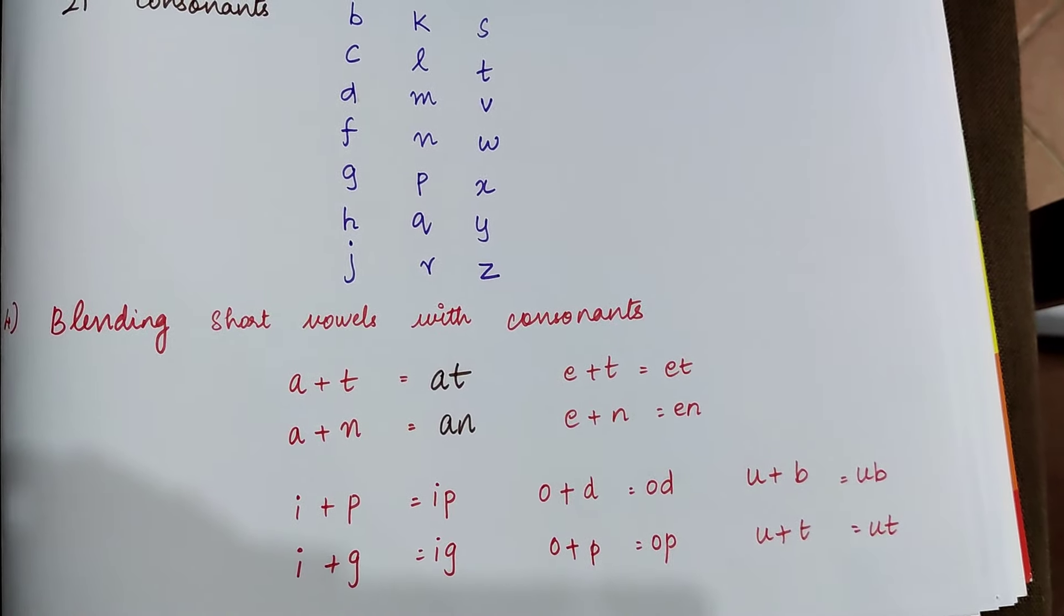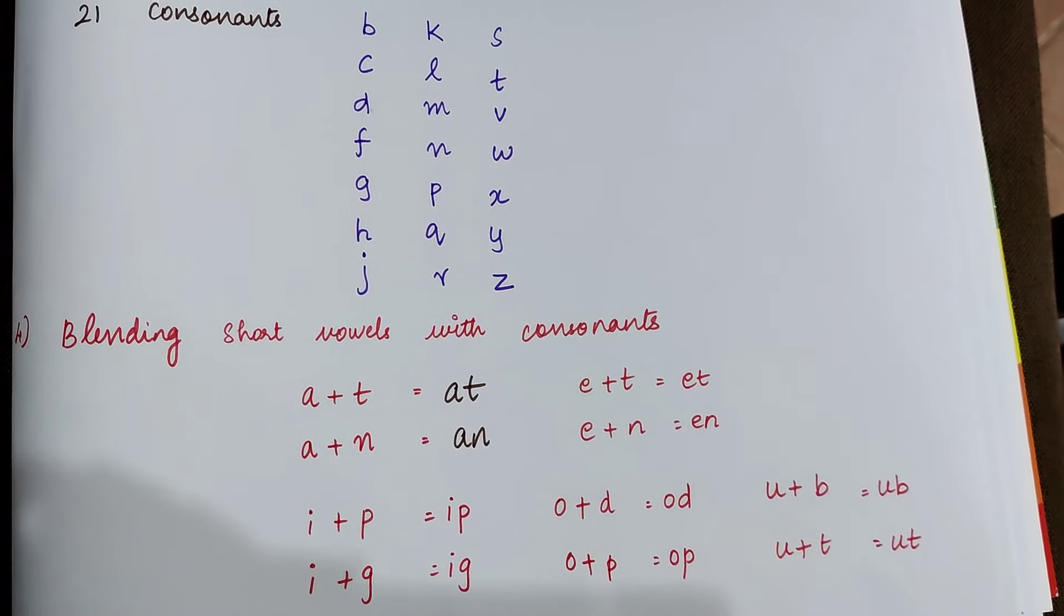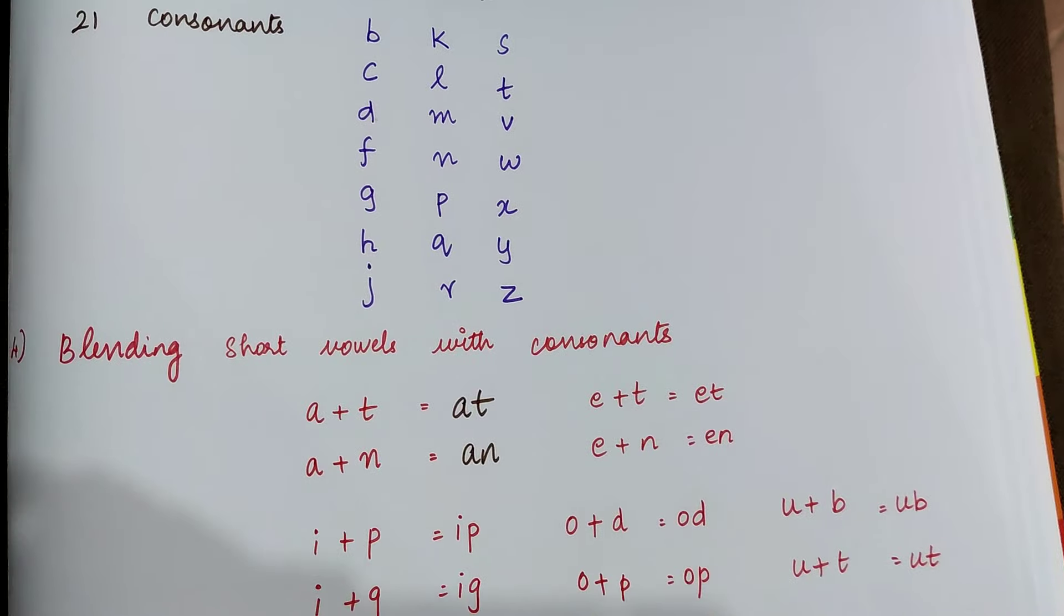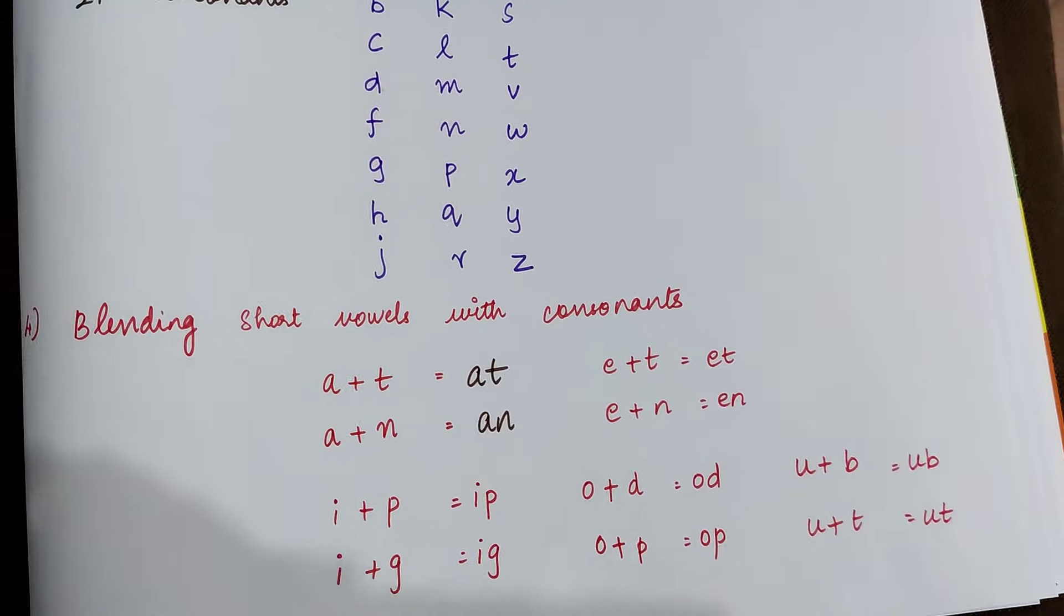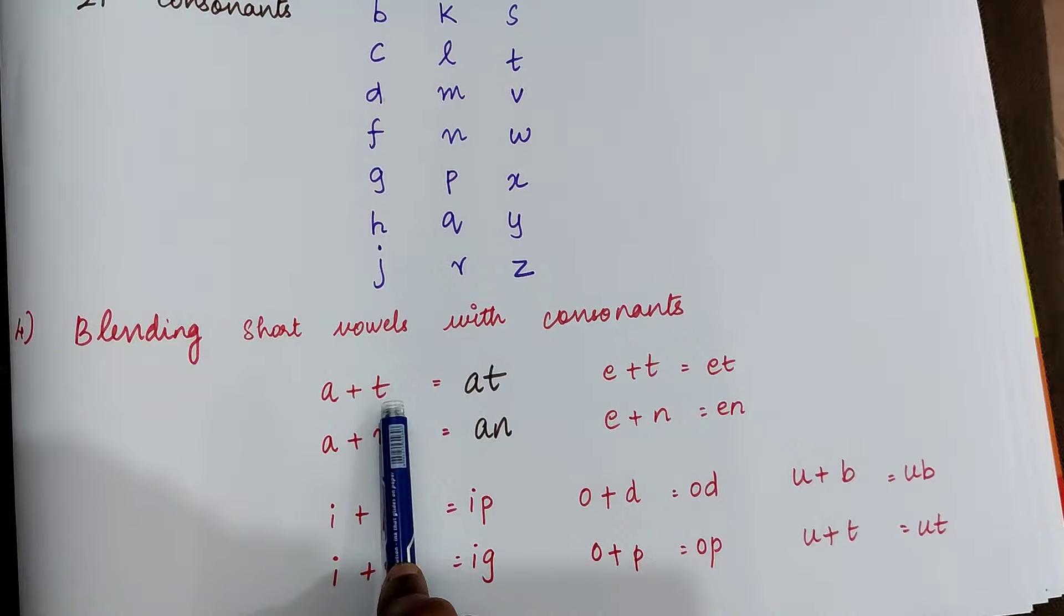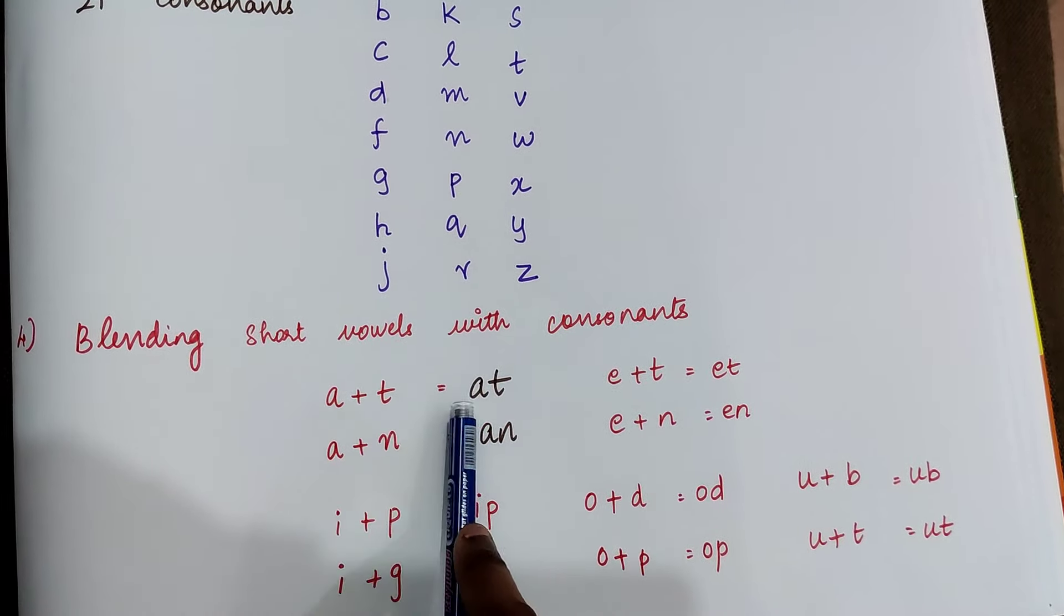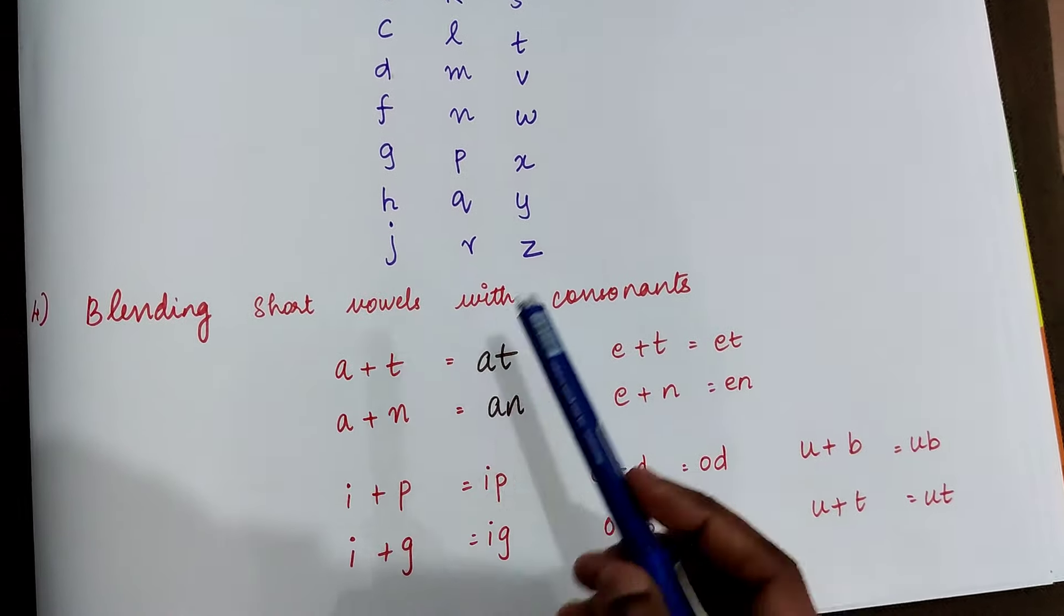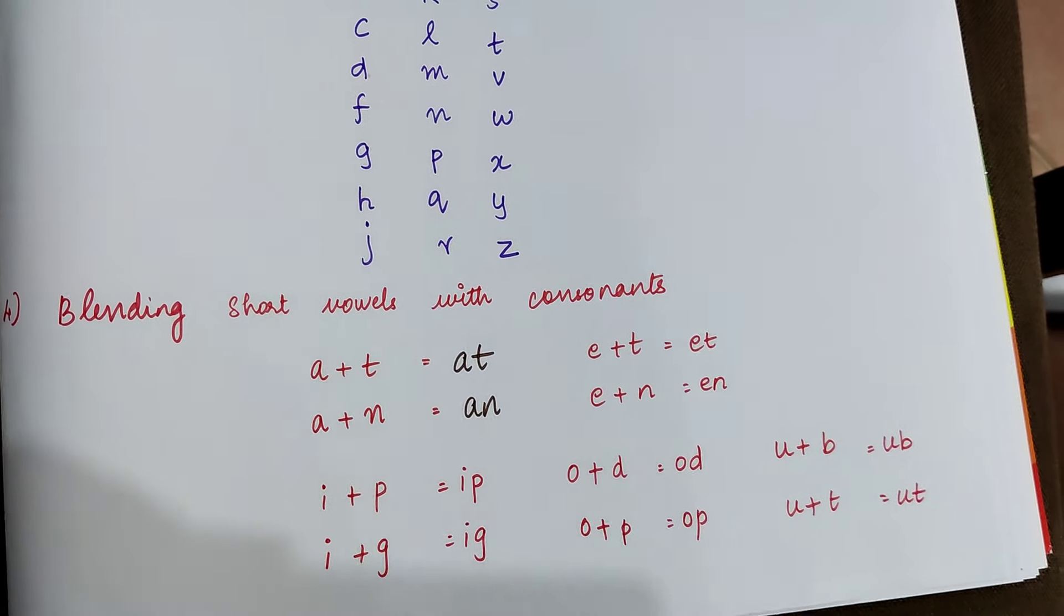Once the child has mastered all the vowels and the consonant sounds and is able to identify whether a letter is a vowel or a consonant, we can go ahead and teach them blending. So what is blending? Blending is joining together individual sounds of the letters. So here we are blending the short vowel sound a with the consonant sound t: a, t, at. A, n, an. So likewise there are a set of two letter blends that the child should know.